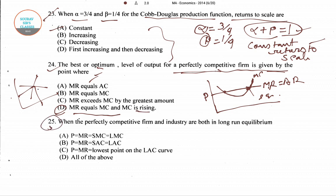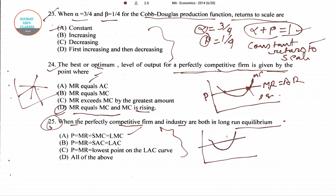The last question in this section — when a perfectly competitive firm and industry are both in long-run equilibrium, what holds? In the long run, P = MR = MC, and both SMC and LMC cut at the equilibrium point, with SAC also satisfied. So for question number 25, when both firm and industry reach long-run equilibrium, all of the above conditions hold, making option D the right answer.